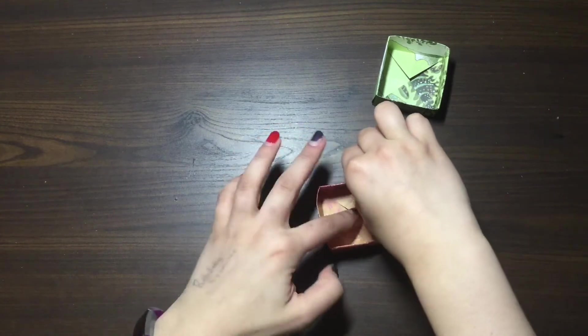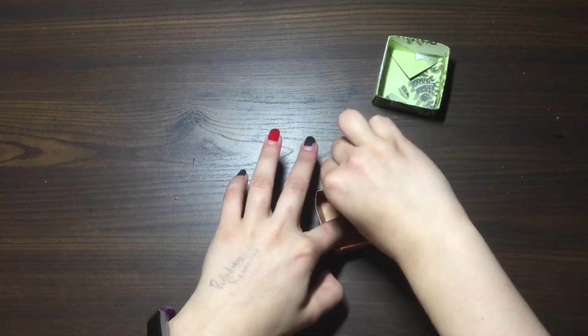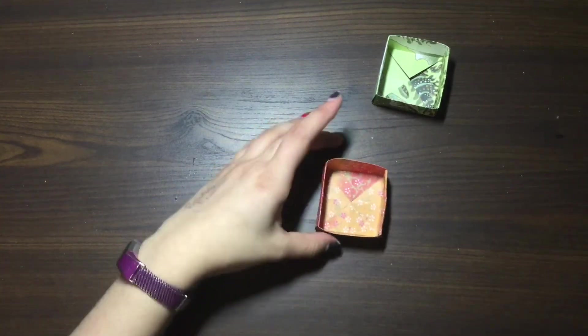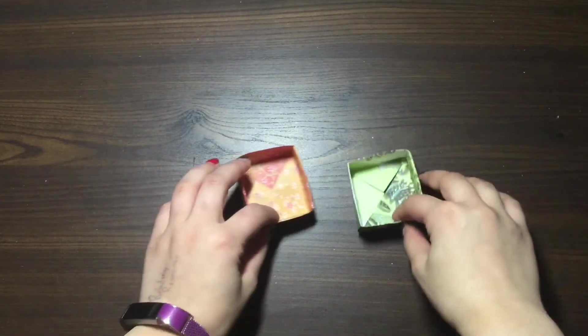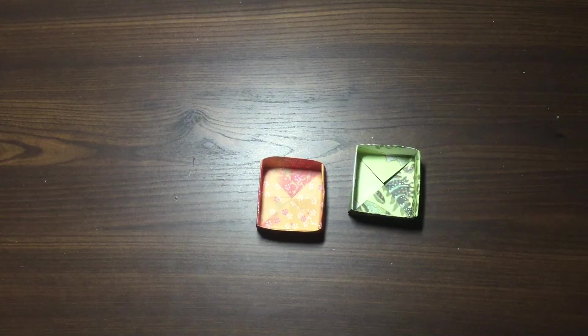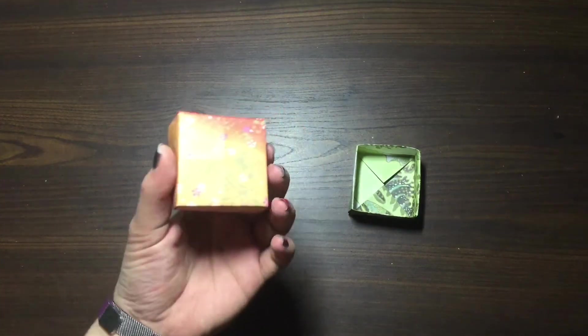And sometimes if it doesn't stay, you can put a little piece of tape in the middle. But yeah, so that is how you make an origami box. Thank you guys so much for watching. If you'd like to see more origami in the future, I would love to show you some more tutorials.